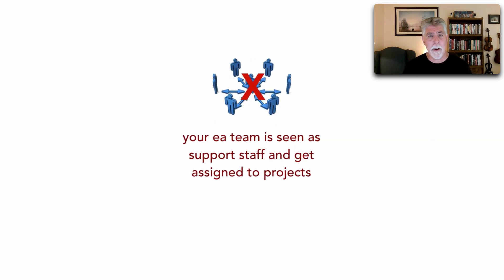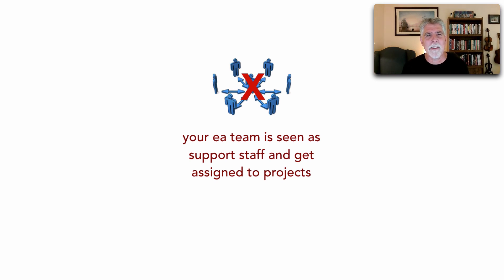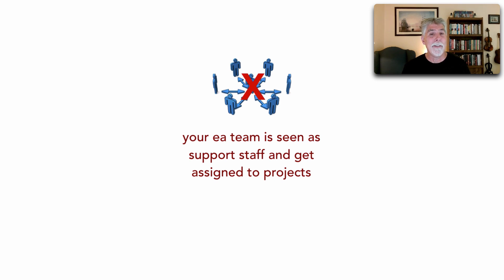The second warning sign is that your enterprise architecture team members are seen as support staff and start getting assigned to different projects — tactical rather than strategic initiatives. This is a sign that you're seen as additional headcount rather than a cohesive team implementing business initiatives.